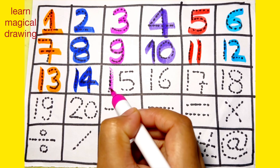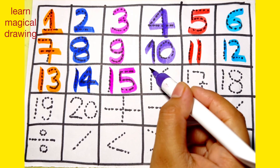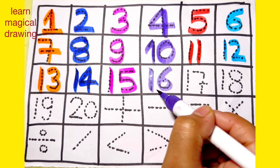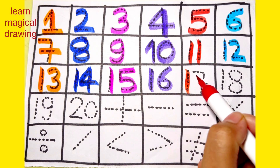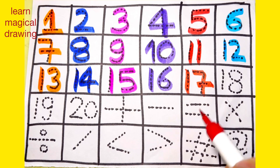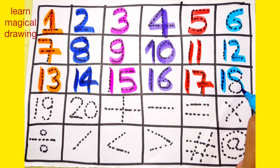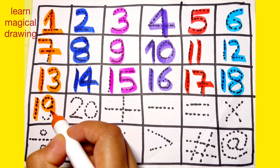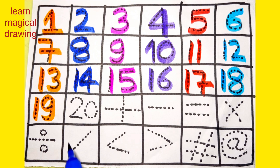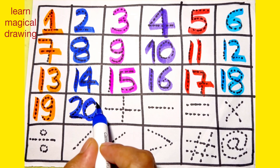Number 10. 1, 5 — 15. 1, 6 — 16. 1, 7 — 17. 1, 8 — 18. 1, 9 — 19. 2, 0 — 20.